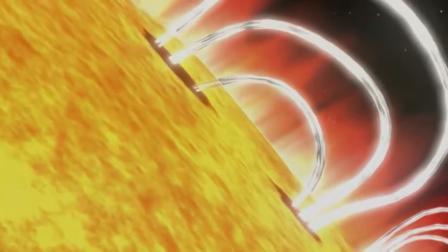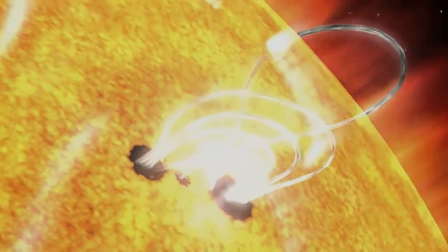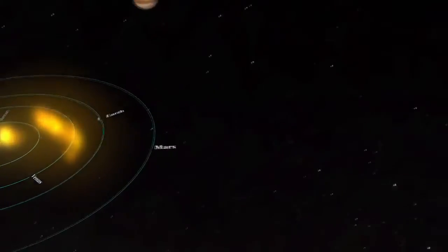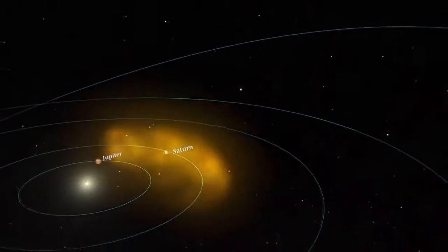The number of sunspots is important because sunspots are the visual markers of where powerful magnetic fields have emerged from the Sun's interior. These magnetic fields power solar flares and coronal mass ejections, which can affect Earth and other objects in the solar system. As the sunspots increase, so does the frequency and severity of flares and CMEs.